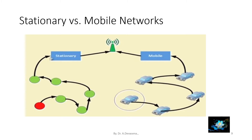Information is passed between the sensor nodes. In a mobile network, the sensor nodes are moving, whereas in a stationary network, the sensor nodes are not moving. In a mobile network, nodes move from one location to another and information is passed from source to destination while the sensor nodes are in motion.